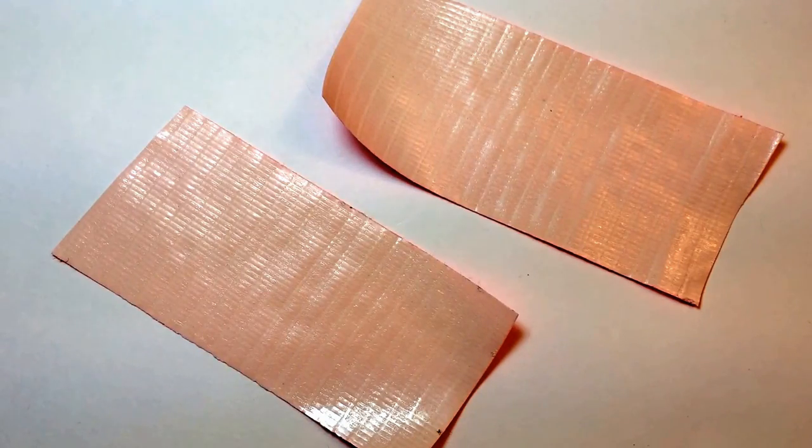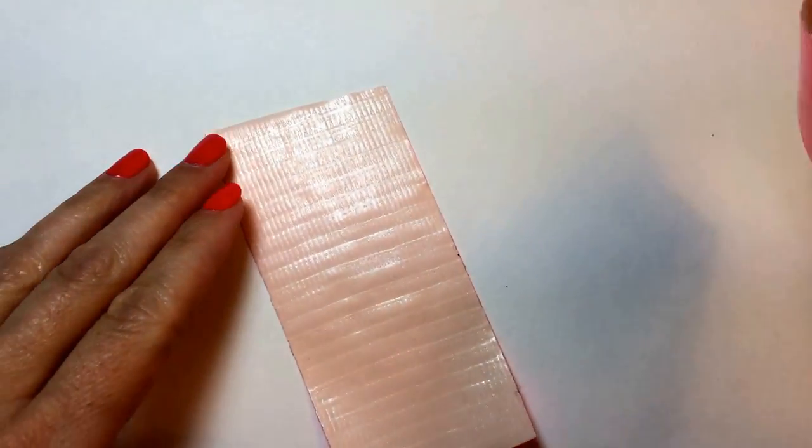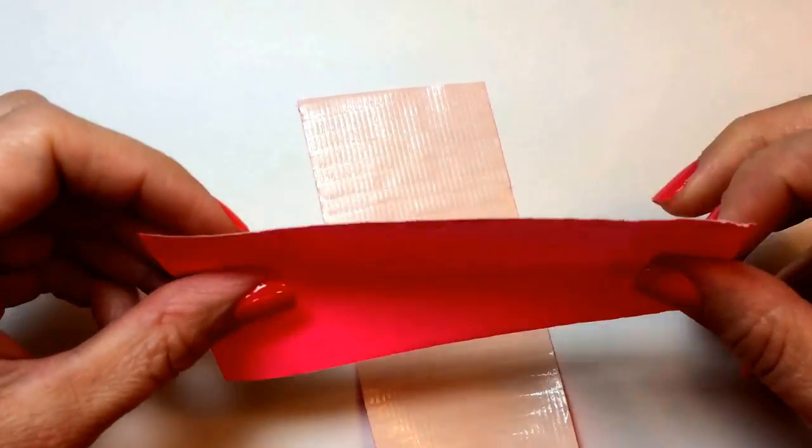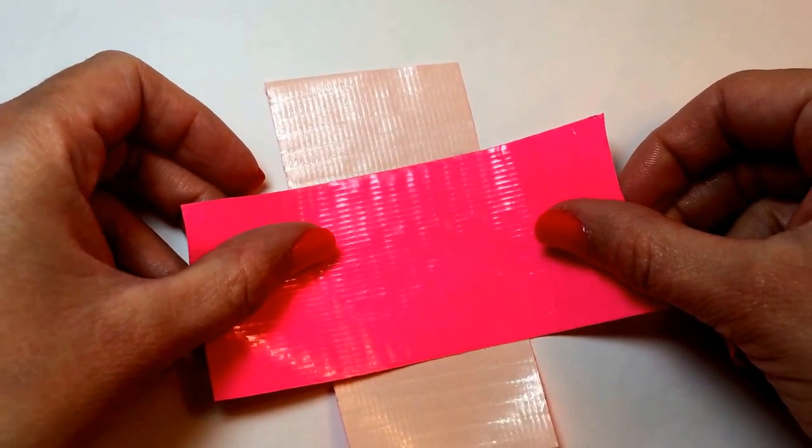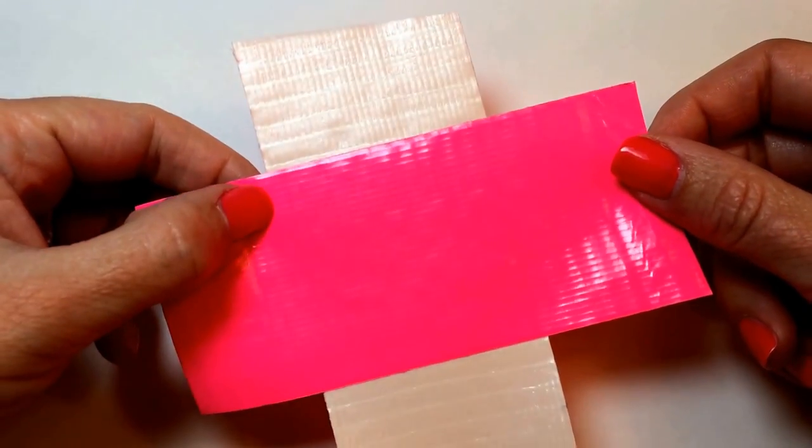So, if they're not exactly the same length, it's still going to work fine. Take your two pieces and putting sticky side to sticky side, you want to make a plus sign shape like that.